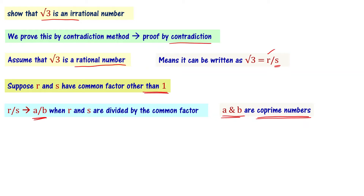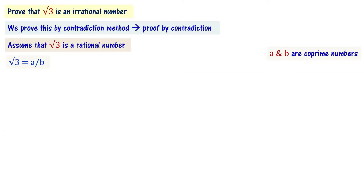So let me write root 3 equal to a by b, where a and b have only one common factor, that is number 1. Now let me apply square on both sides. We get root 3 times b equals a, and squaring gives us 3 times b squared equals a squared.